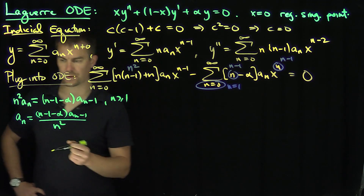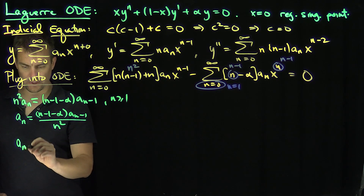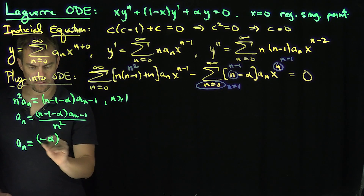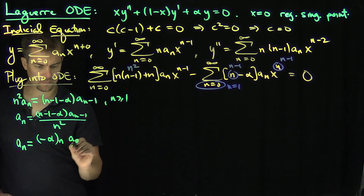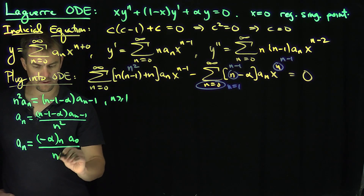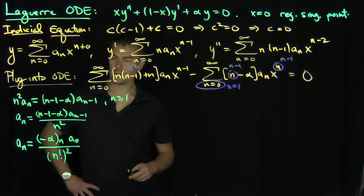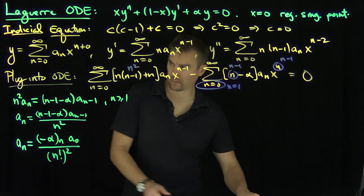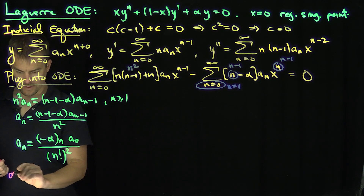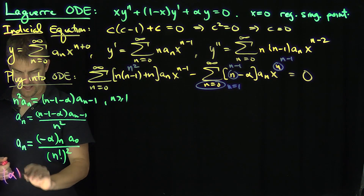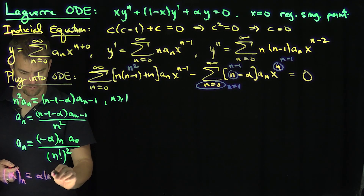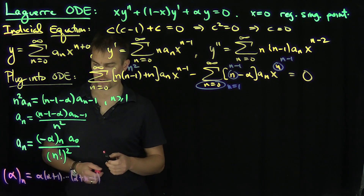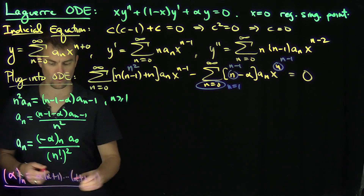We can easily solve this recursion by iterating it repeatedly. The result is a_n equals negative alpha ascending factorial n times a_0, all over n factorial squared. Here the ascending factorial notation means alpha times alpha plus 1 times ... times alpha plus n minus 1, which is exactly the form we have.